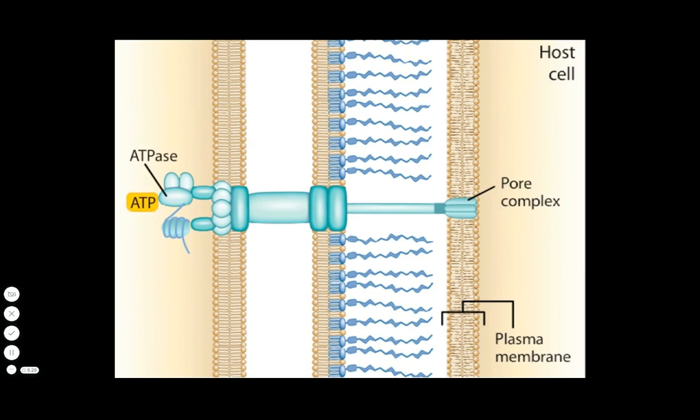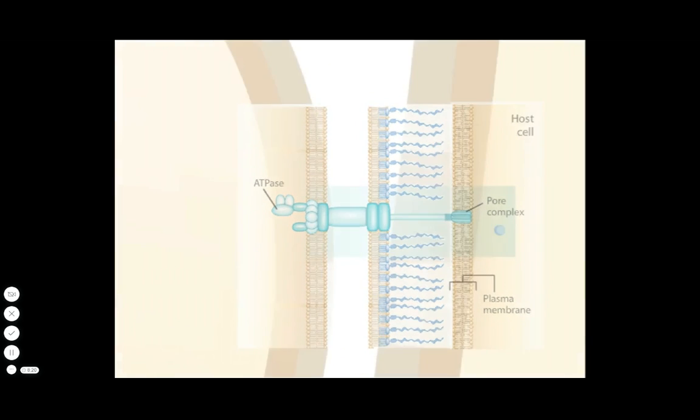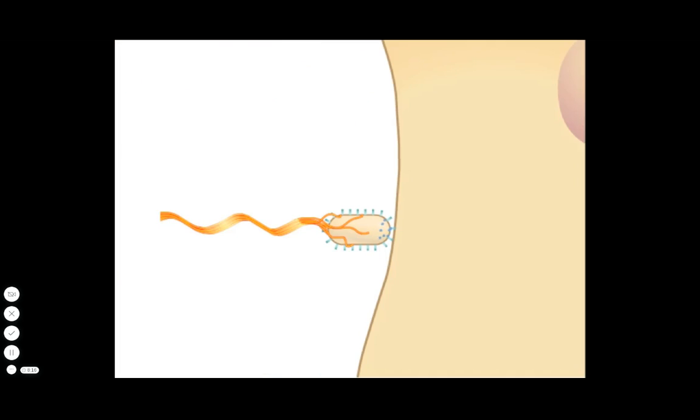An ATPase triggers the release of the effector proteins and helps them to unfold and begin their journey through the narrow channel in the needle. Direct delivery to the cytoplasm of the host cell is a good idea because it eliminates the dilution that happens when a toxin is secreted into media.